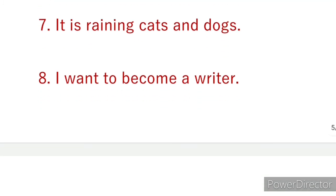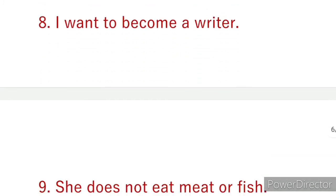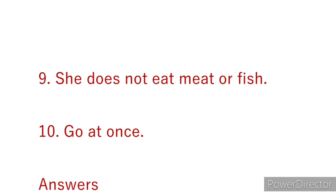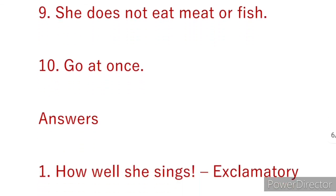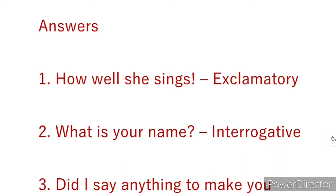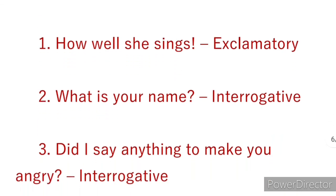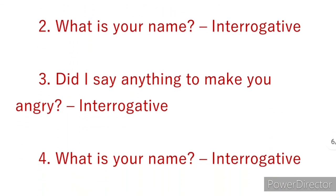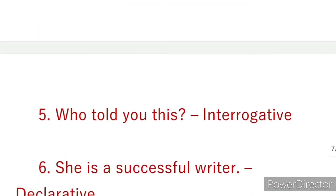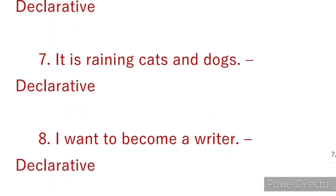'She is a successful writer' — declarative. 'It is raining cats and dogs' — declarative. 'I want to become a writer' — declarative. 'She does not eat meat or fish' — declarative. 'Go at once' — imperative, because it is giving a command. These are the answers to the exercise questions.